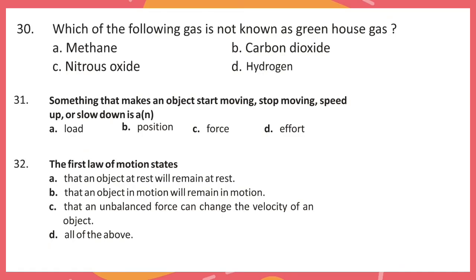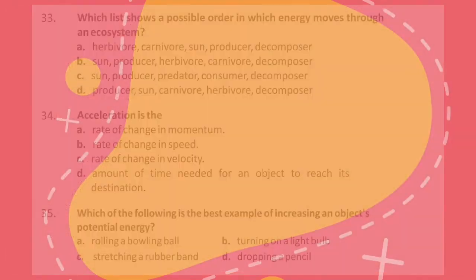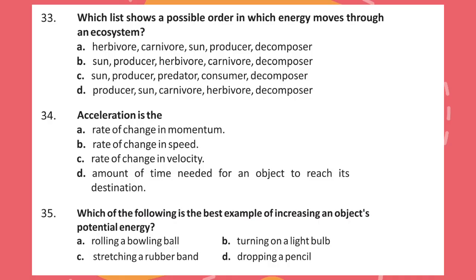Question 31: Something that makes an object start moving, stop moving, speed up or slow down is an? Question 32: The first law of motion states? Question 33: Which list shows a possible order in which energy moves through the ecosystem? Question 34: Acceleration is the?